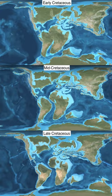The Cretaceous was a period with a relatively warm climate, resulting in high eustatic sea levels that created numerous shallow inland seas. These oceans and seas were populated with now-extinct marine reptiles, ammonites and rudists, while dinosaurs continued to dominate on land. During this time, new groups of mammals and birds, as well as flowering plants, appeared.